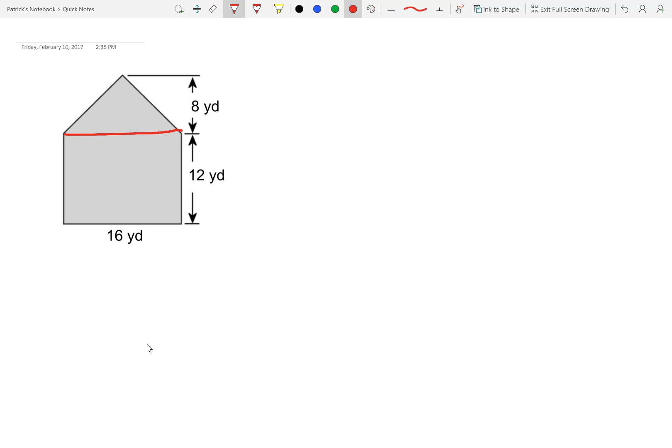As you can see, I draw a line here and I'm going to break it into a triangle up top and a rectangle on the bottom. So let's start with the area of a rectangle.